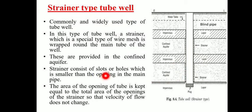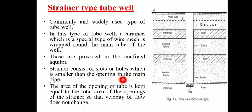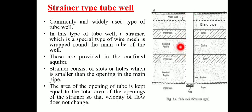The strainer consists of slots or holes which are smaller than the openings in the main pipe. The area of the openings of the main pipe is kept equal to the total area of openings of the strainer, so that the velocity of flow does not change.